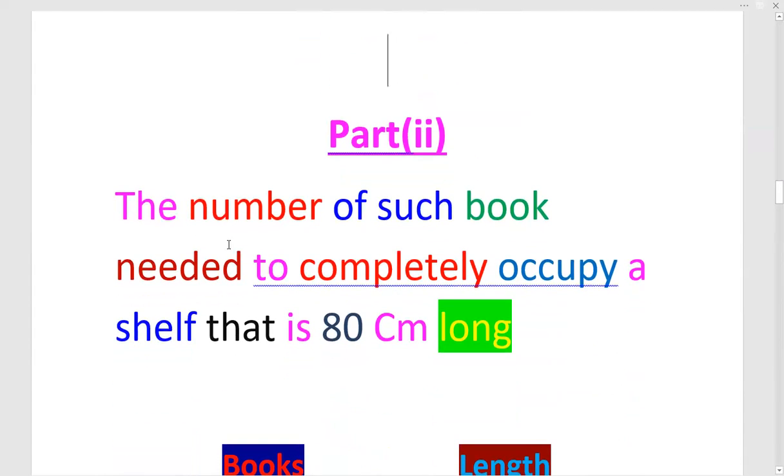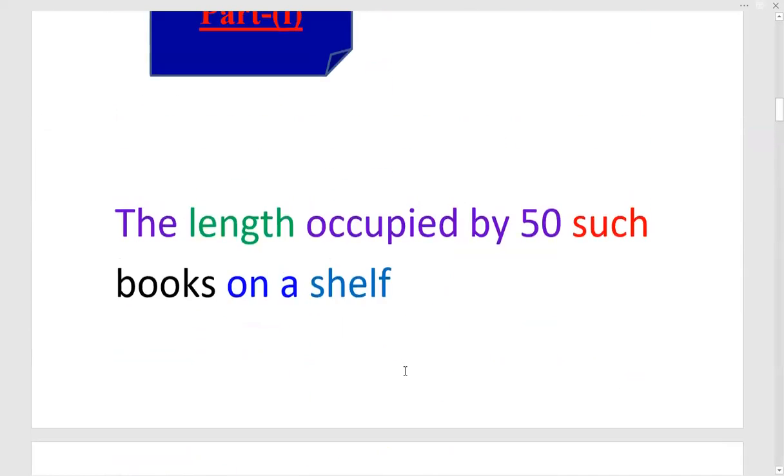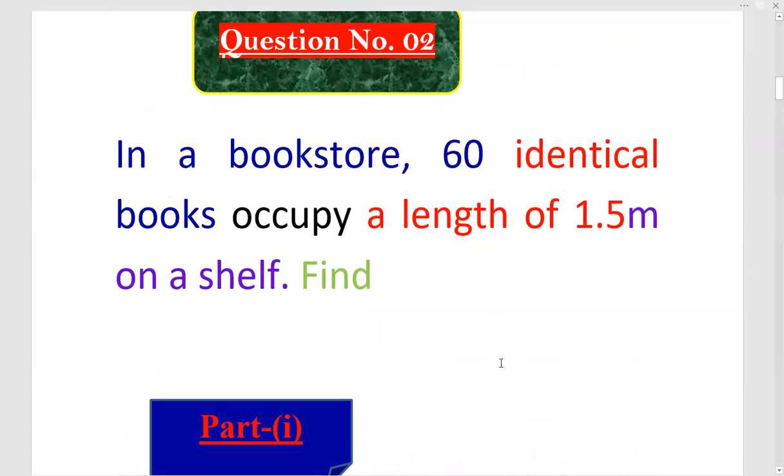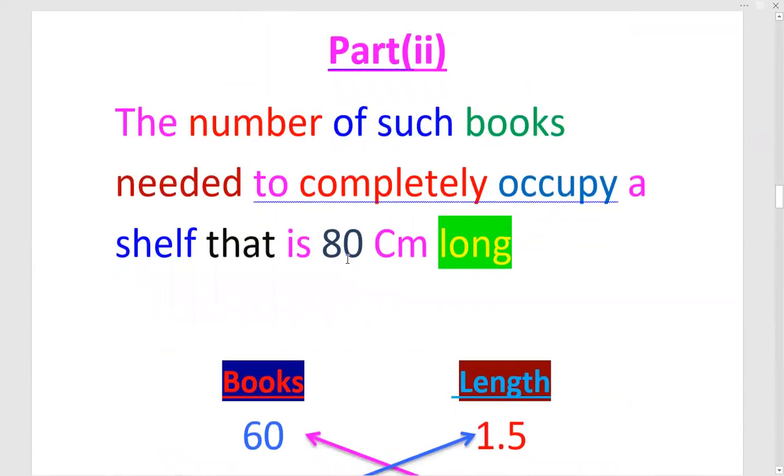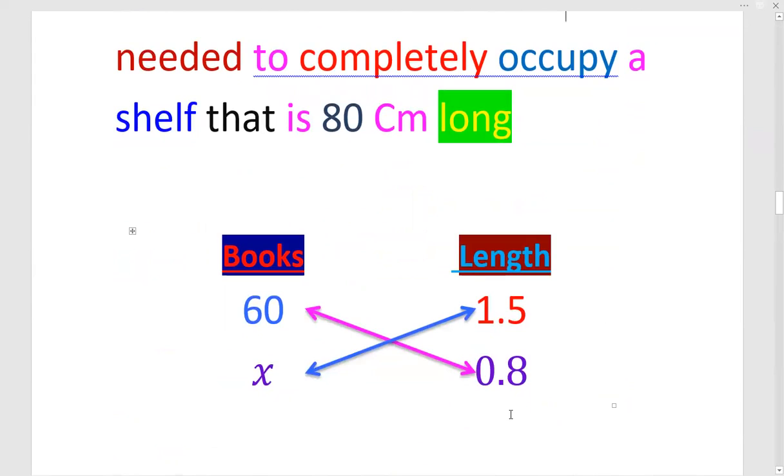Part 2 you have: the number of such books needed to completely occupy a shelf that is 80 cm long. Here also you have to use your wisdom to solve the question. Now see, in the original question, the length we have is 1.5 meter, meaning its unit is meter. In this case, in part 2, the length he has provided you is 80 cm. So first you have to divide 80 by 100, the answer is 0.8 - 0.8 meter, because the solution is done in the same unit.